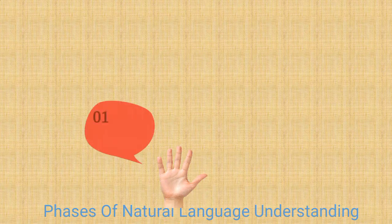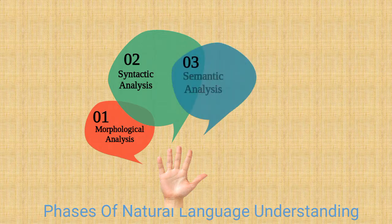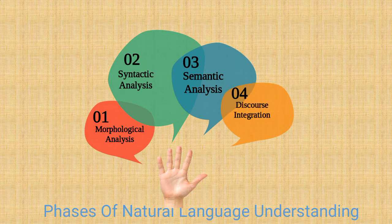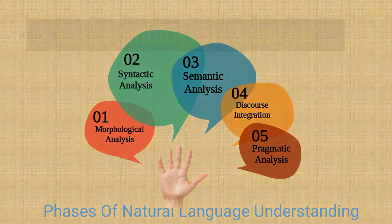There are certain phases of natural language understanding. The machine performs these steps so that it can interpret and understand human spoken language. There are 5 phases: first is morphological analysis, second is syntactic analysis, third is semantic analysis, fourth is discourse integration, and fifth is pragmatic analysis. Now let's understand them one by one in detail.